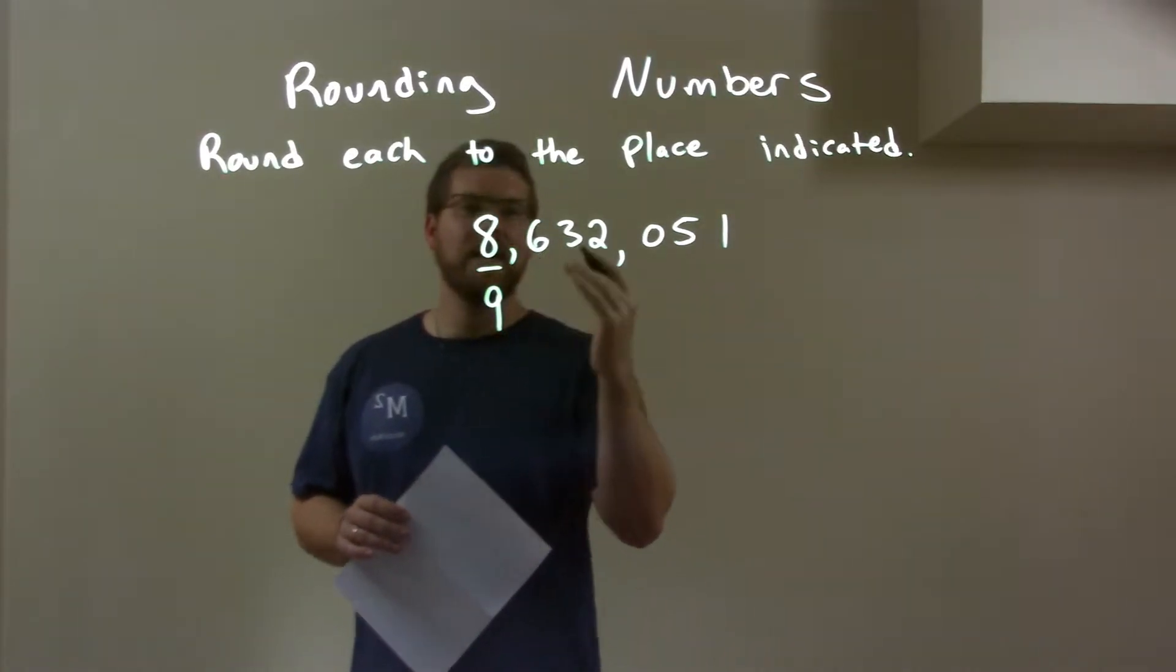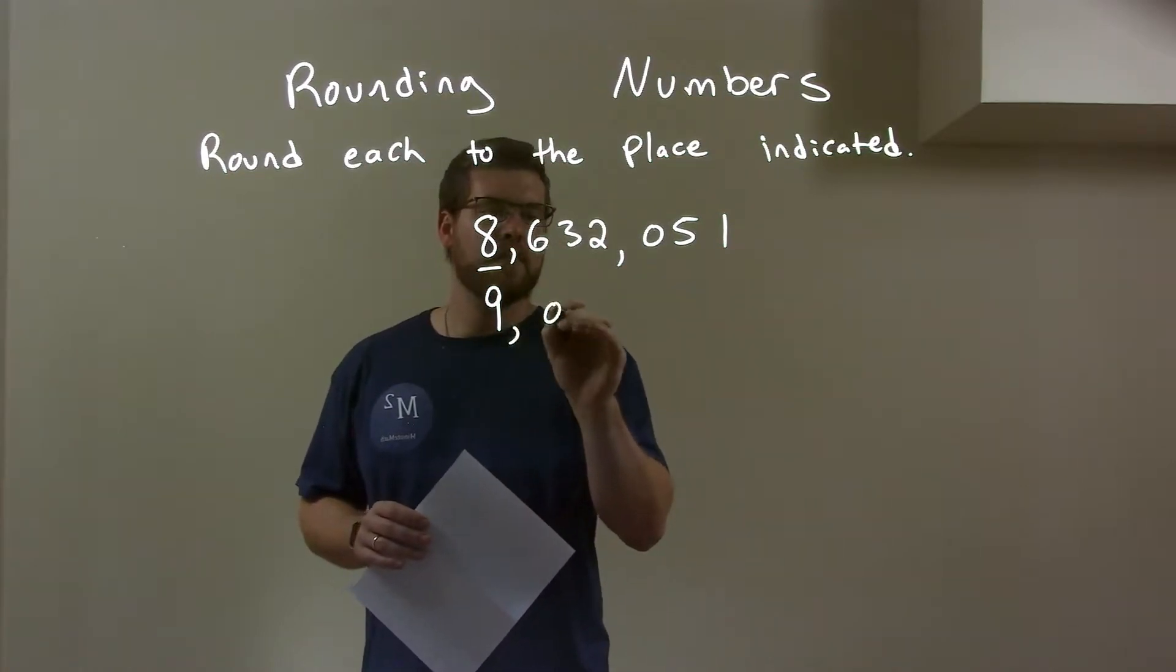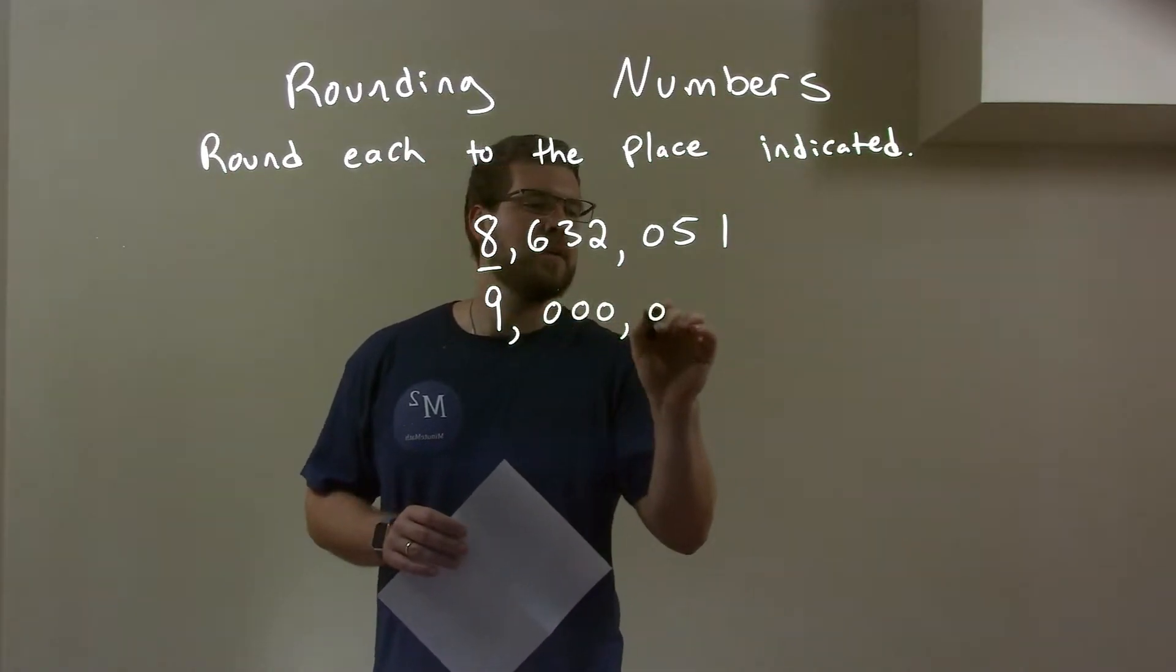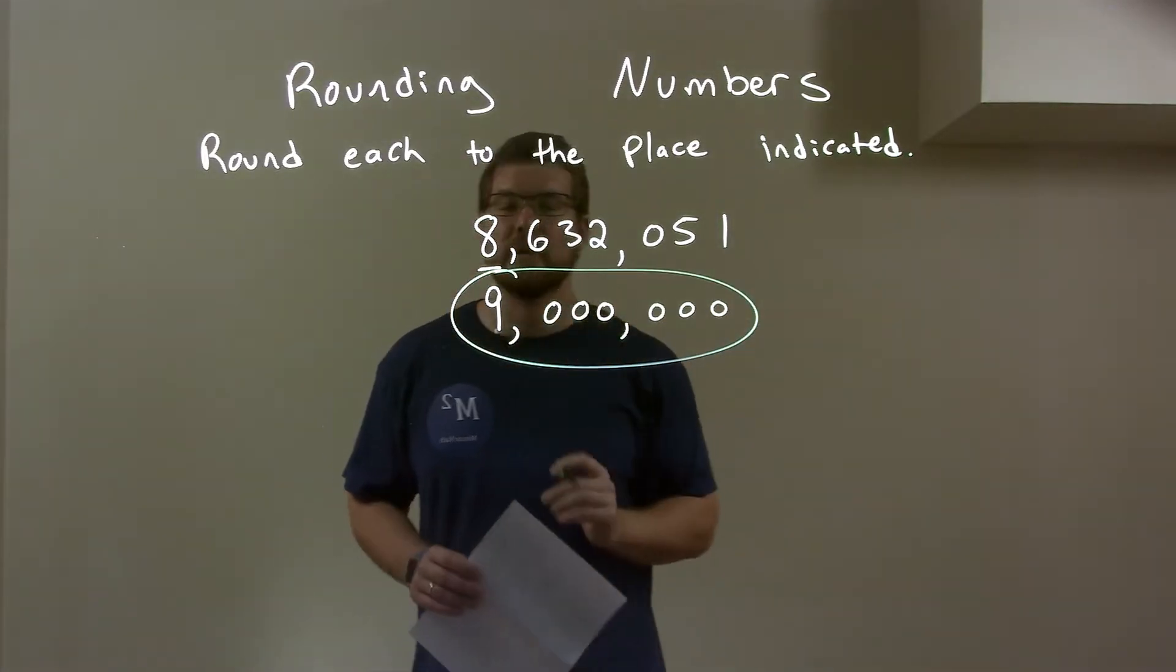So we always look to the right. The 6, since it's above our 5 and up, rounds up to that 9, and the rest are just 0s. And so our answer here is just 9 million, and that's our rounded answer.